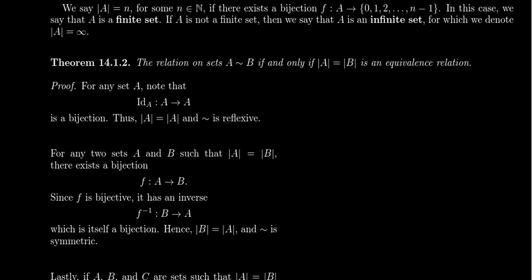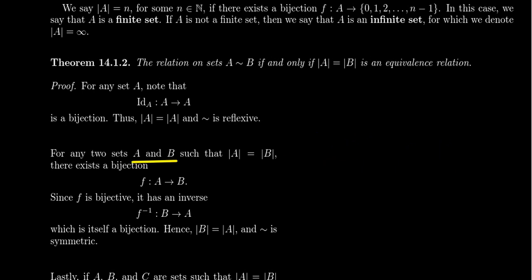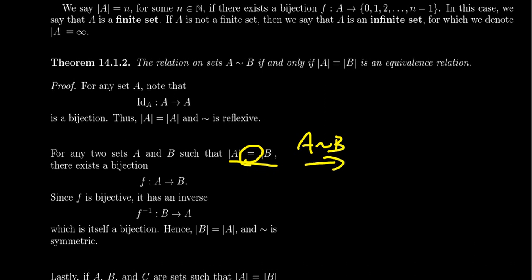For symmetry: suppose sets A and B are related, meaning they have the same cardinality. By definition, there exists a bijection F from A to B. Since F is a bijection, we've proven that bijections always have inverses. The inverse F⁻¹ goes from B to A and is itself a bijection. Therefore, since there exists a bijection from B to A, B has the same cardinality as A, showing the relation is symmetric.